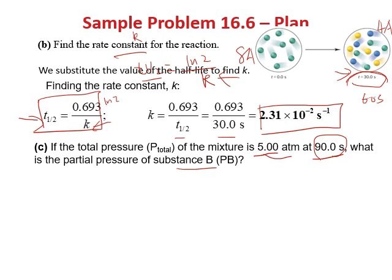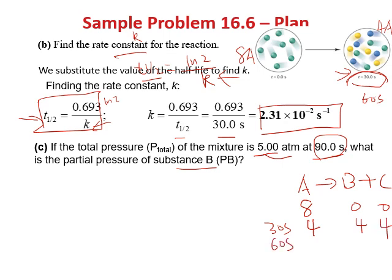After 3 half-lives of the reaction A → B + C: starting with 8 A, after 30 s you have 4A, 4B, 4C; after 60 s: 2A, 6B, 6C; after 90 s: 1A, 7B, 7C. So the mixture contains 1 A, 7 B, and 7 C.